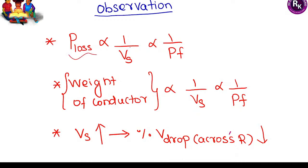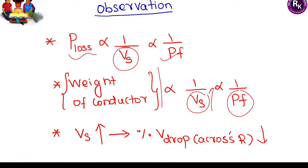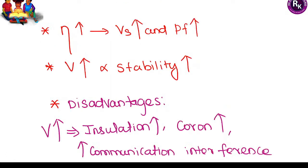Key observations for transmission lines: losses are inversely proportional to supply voltage and power factor. Weight of the conductor is also inversely proportional to supply voltage and power factor. Increasing supply voltage reduces conductor weight — that is why transmission lines carry high voltage. If weight increases, power loss increases; so we carry less current and high voltage. Voltage drop across resistance decreases as supply voltage increases.